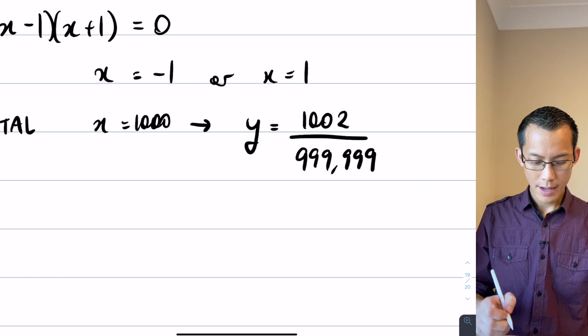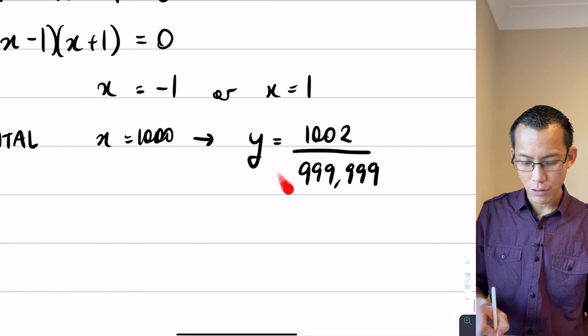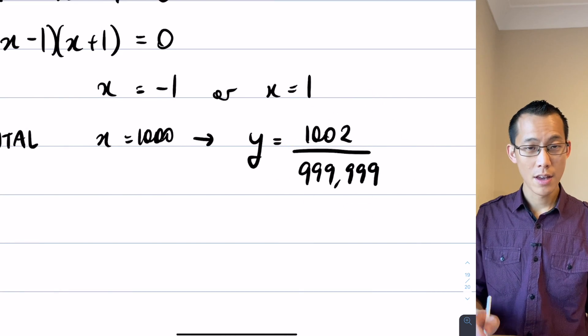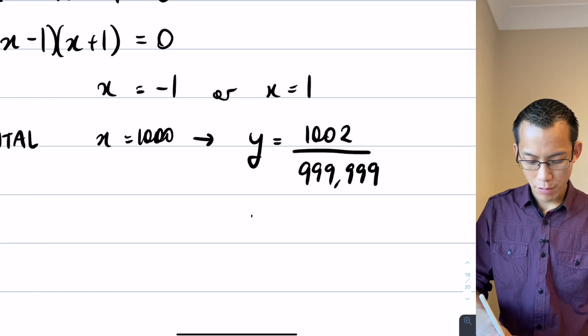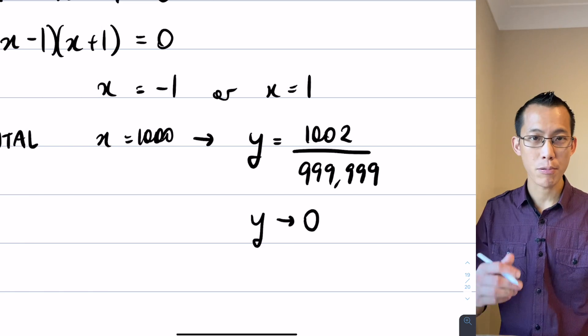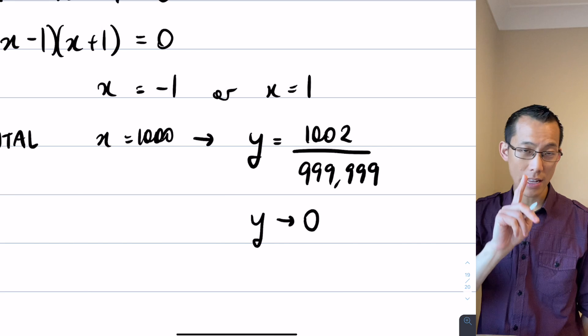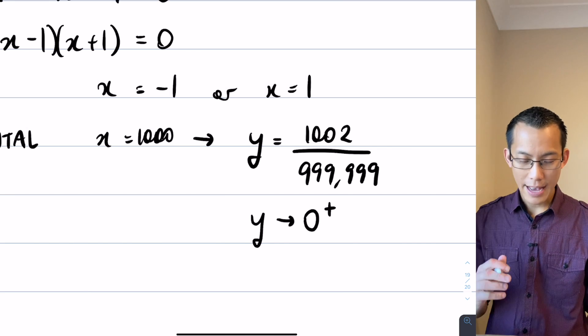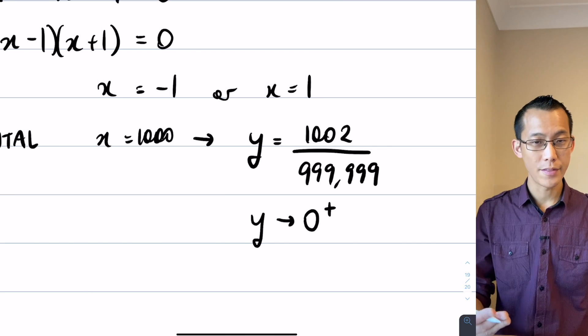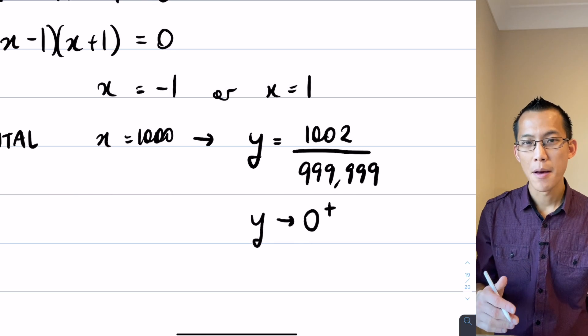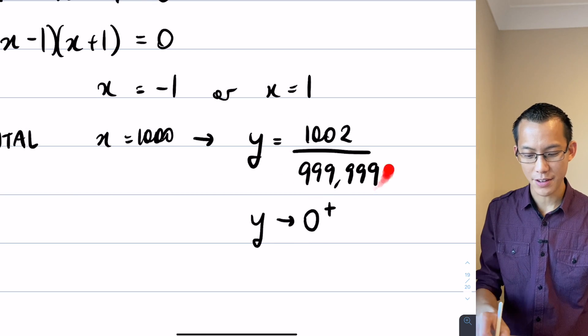So that means that you're always going to get this enormous denominator here, which means that y is approaching zero. But importantly, you might notice that you've got a positive value here on the numerator and the denominator. So therefore y is approaching zero but it's approaching it from above. As you approach x is positive infinity, y is going to get closer and closer to zero but it'll do it from positive values.